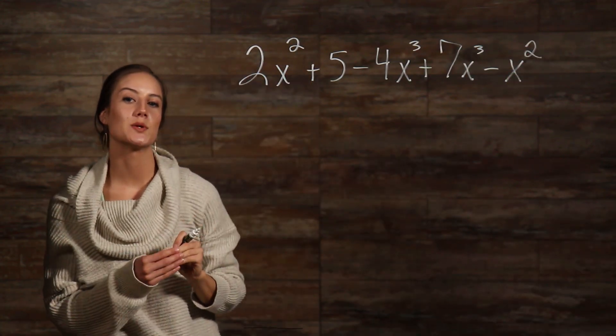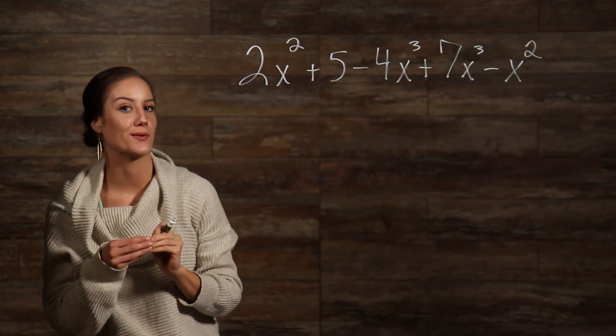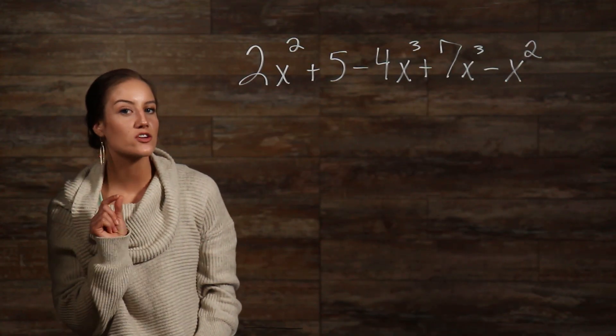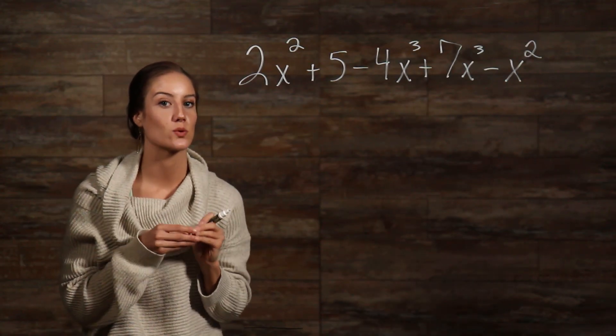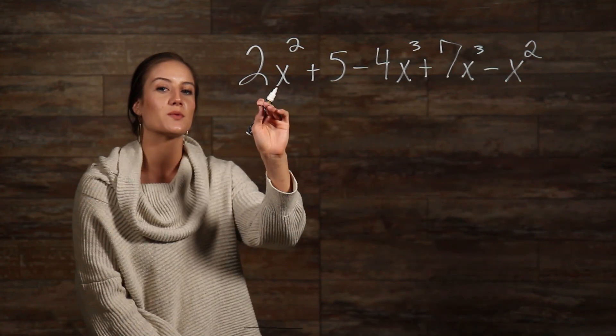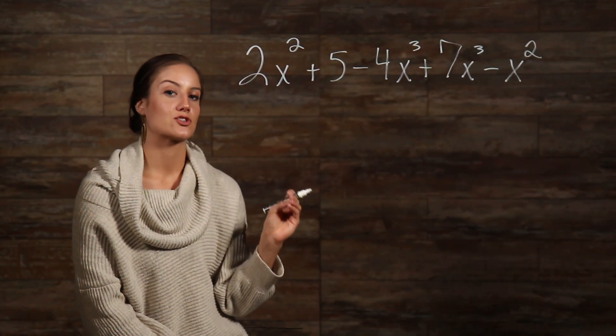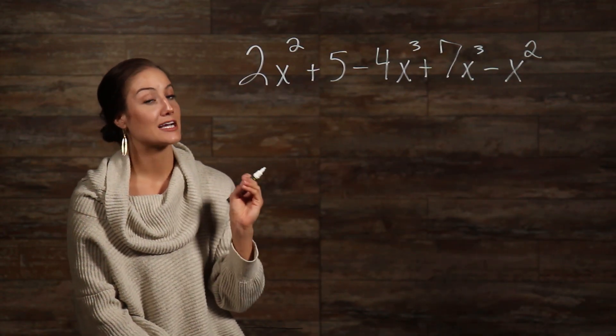Alright, so in this example, some of the terms have different exponents, so we need to identify all of our terms that can be combined together in order to simplify this expression. Starting with our 2x squared, are there any other terms with an identical base and exponent? Yes,